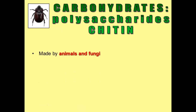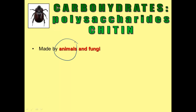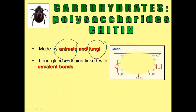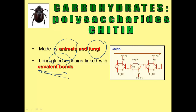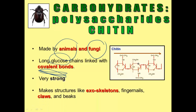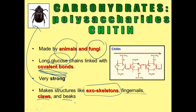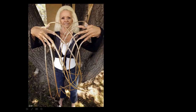The last polysaccharide we'll talk about is chitin. Chitin is found throughout the living world — you can see chitin in animals and in fungi. Chitin is again long sugar chains, but this time they're joined together with covalent bonds, which makes them really strong. We use chitin to make exoskeletons in bugs, and also to make fingernails, claws, beaks, and other bird structures.